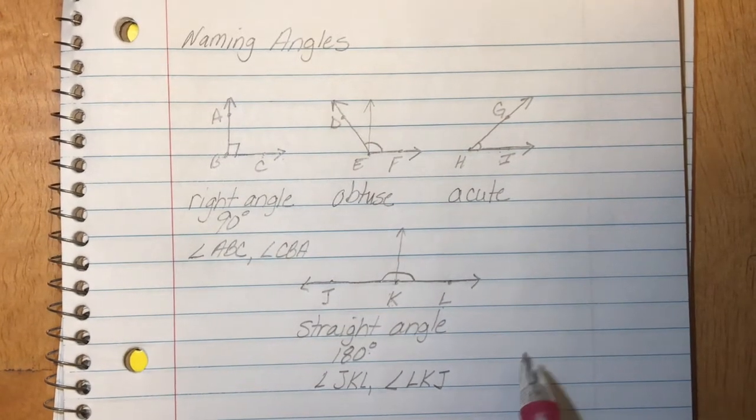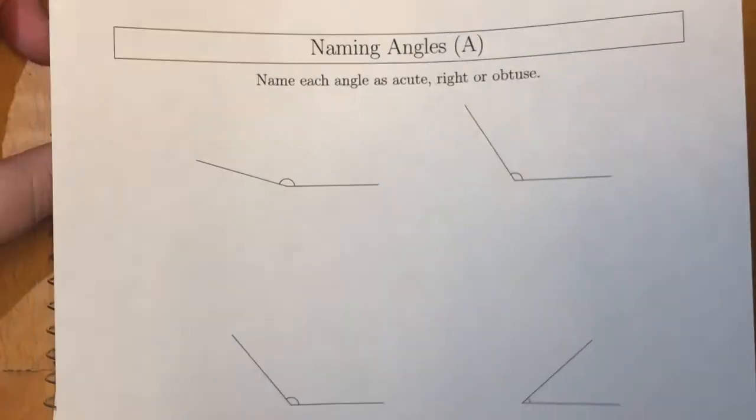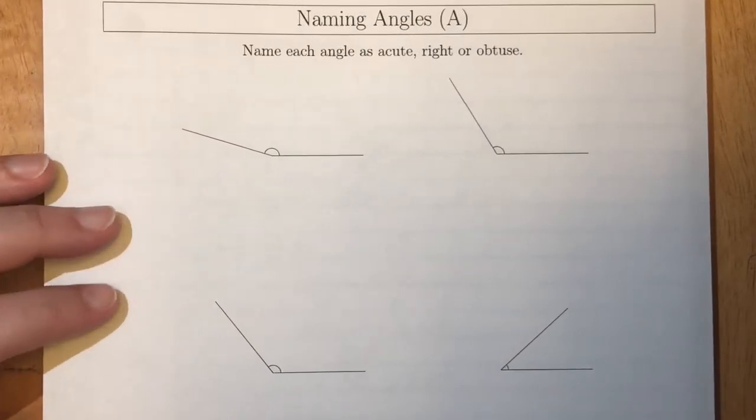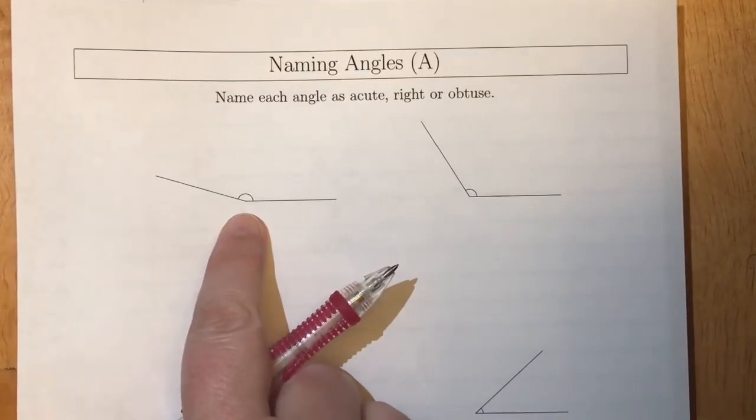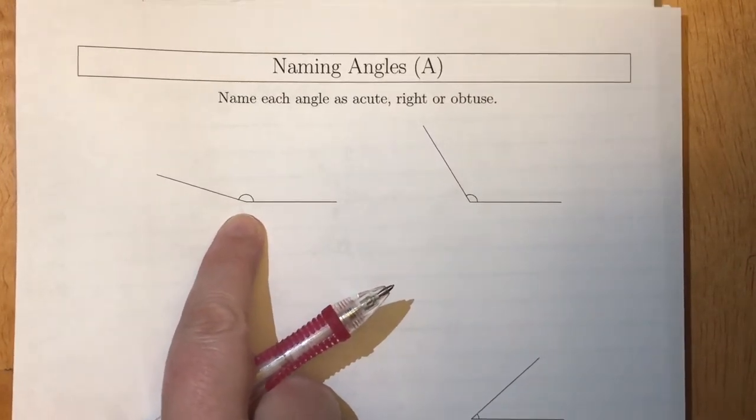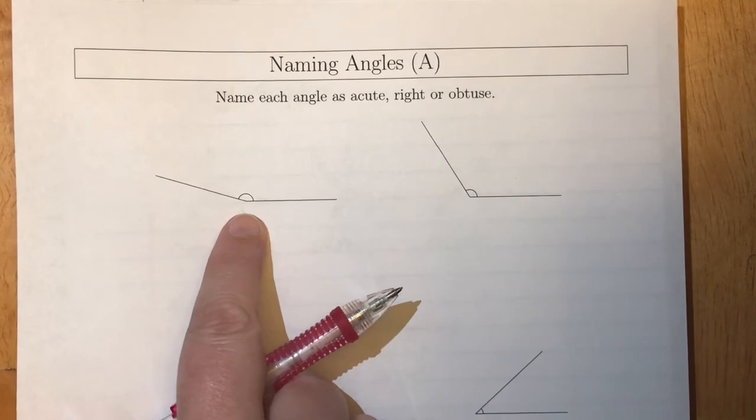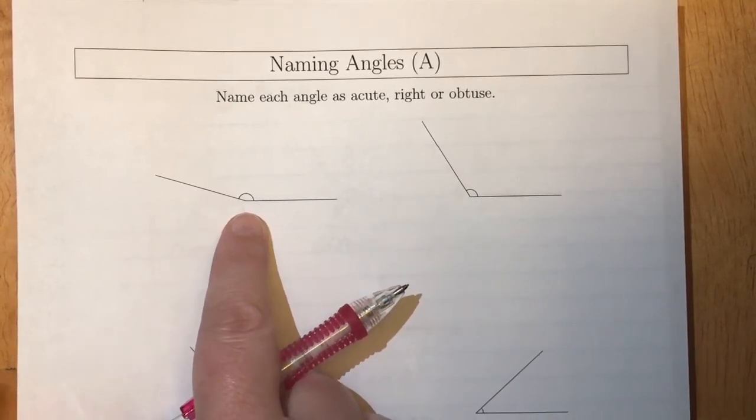So what we're going to do is we're going to practice looking at some pictures of angles to see if you can name those angles. So let's take a look at this angle right here. Now you'll notice that this angle does not have any letters in it. So we can't actually give it a name unless we were to put some points in it. But really all we're doing is telling what kind it is.